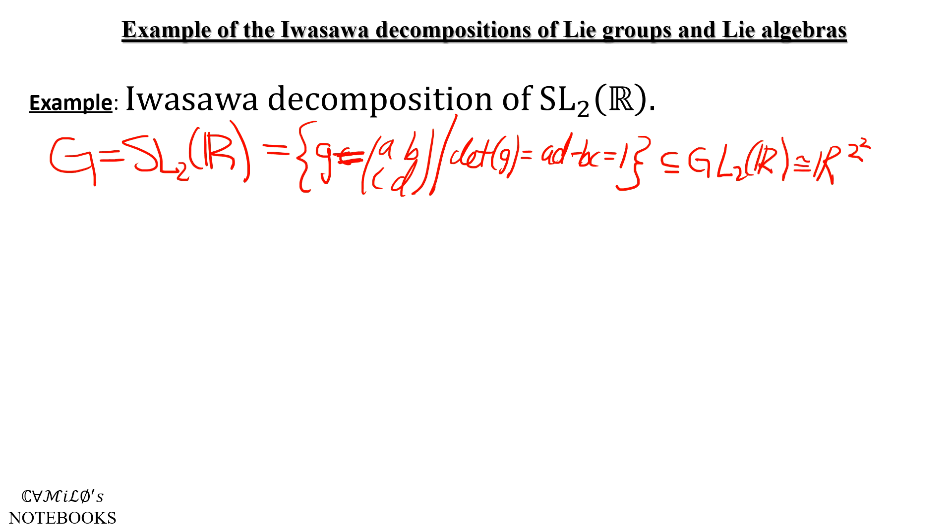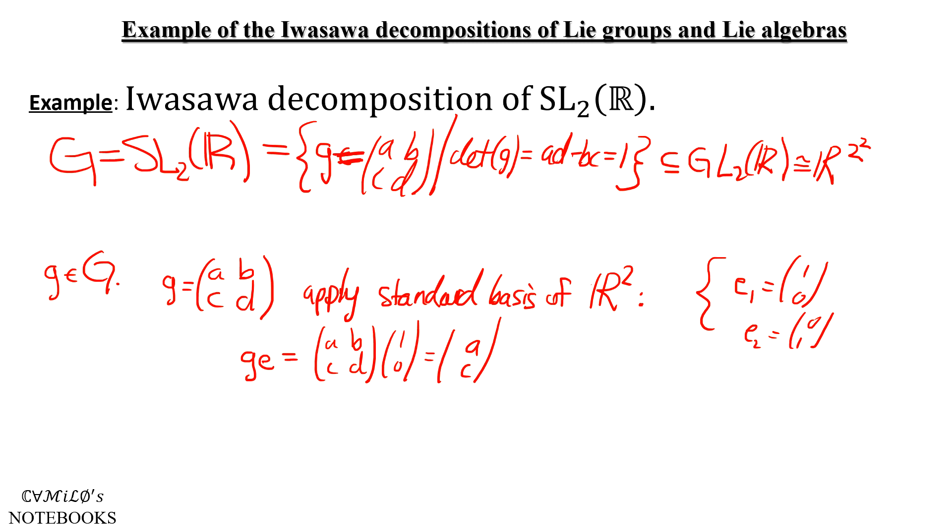So let G be in G. Of course, G looks like this and we're going to see what G does to the standard basis of ℝ². Standard basis E₁ and E₂ of course, just as a brief reminder, are these two vectors. And if we apply G to them, we see that G applied to E₁ gives us the first column (A,C) and G applied to E₂ gives us the second column (B,D).